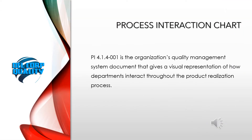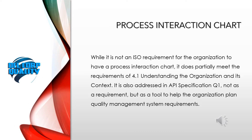PI 4.1.4-001 is the organization's Quality Management System document that gives a visual representation of how departments interact throughout the product realization process. While it is not an ISO requirement for the organization to have a process interaction chart, it does partially meet the requirements of 4.1, understanding the organization and its context.